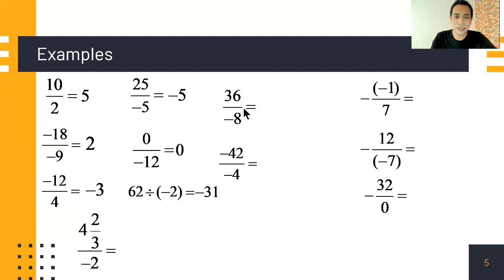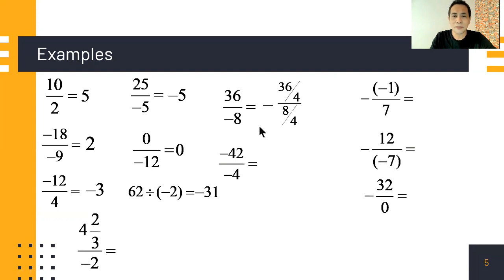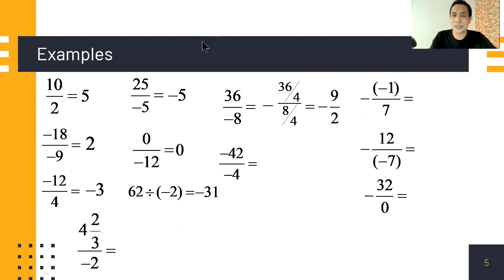Next: 36 divided by negative 8. This is positive divided by negative, so the quotient is negative. Since 36 over 8 doesn't simplify to a whole number, we reduce using the greatest common factor of 36 and 8, which is 4. So 36 over 4 is 9, and 8 over 4 is 2, giving a final answer of negative 9 over 2.